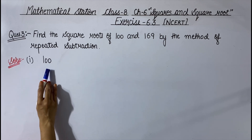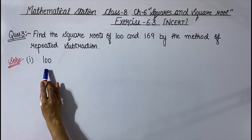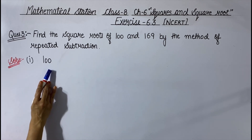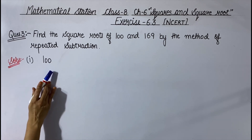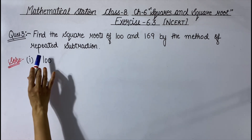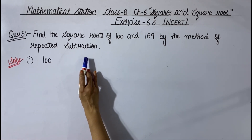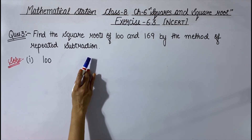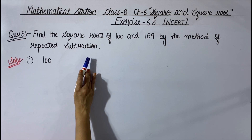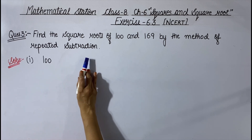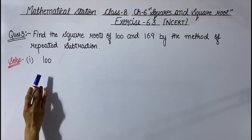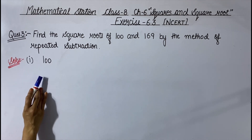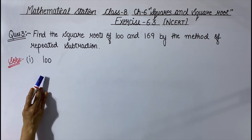First one is 100. We have to find the square root of 100 and we will use the repeated subtraction method. In the repeated subtraction method, we have to subtract successive odd natural numbers. So we will subtract successive odd natural numbers from 100, starting from 1.